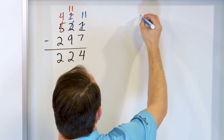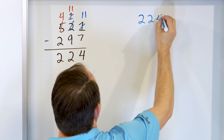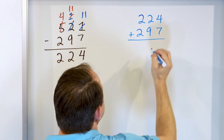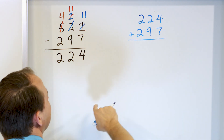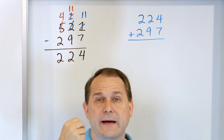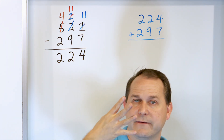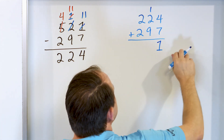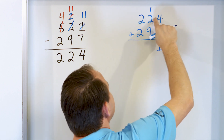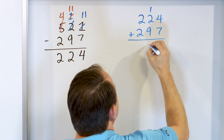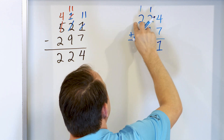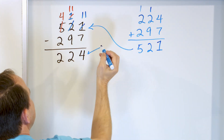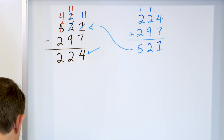We think that's the right answer, so let's add in whatever we just took away: 297. 7 plus 4: start with 7 and go up 8, 9, 10, 11. So 4 plus 7 is 11 — 1 goes here, carry the 1. Now 9 plus 2 is 11, plus 1 carried is 12, carry the 1. 2 plus 2 is 4, plus 1 is 5. We get 521 — that's exactly matching, so we know we did our original subtraction correctly.